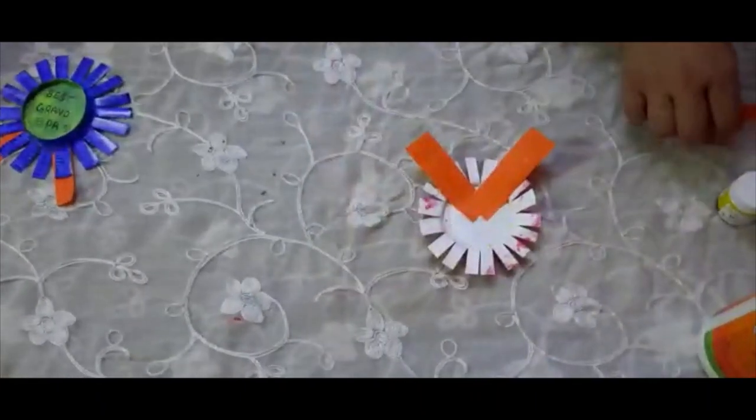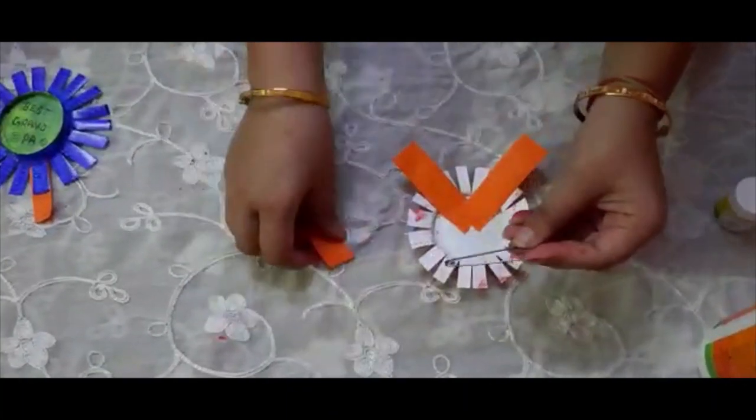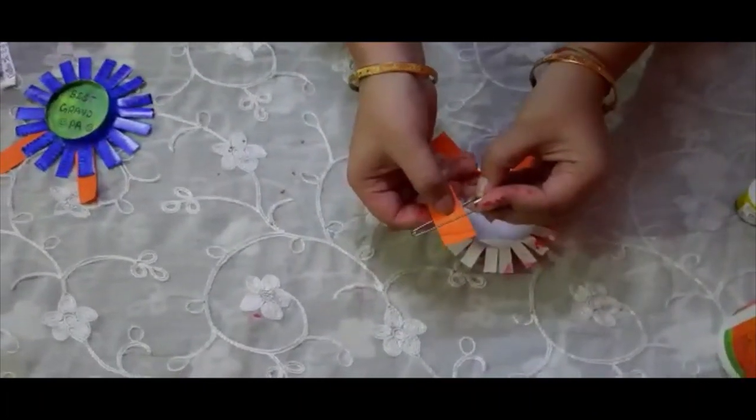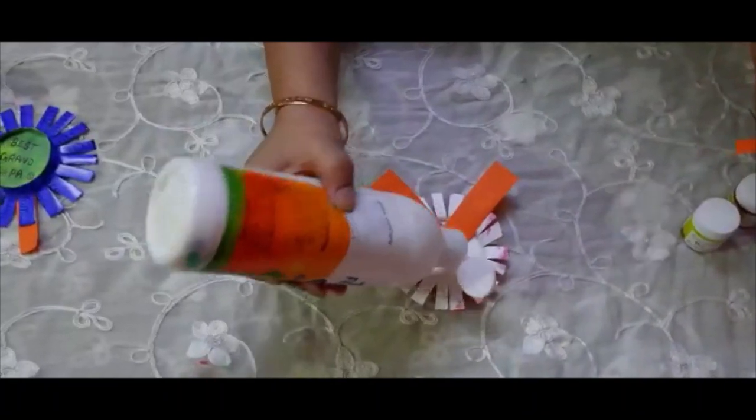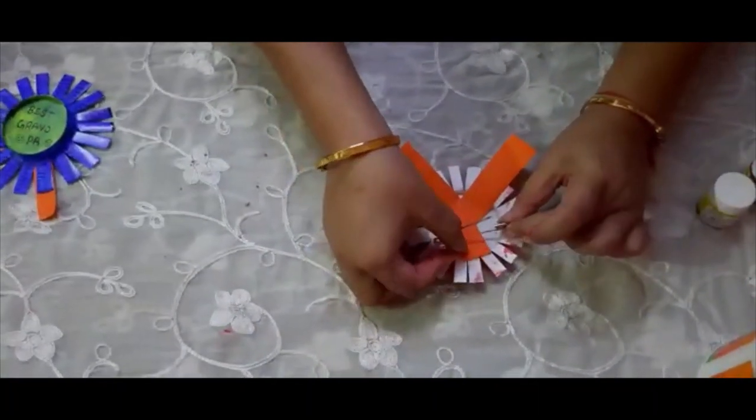Then we have to paste this safety pin. For this, first open the safety pin, and then place this triangle like this in between, and then paste these two ends with the fabric glue here like this.